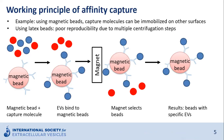The working principle after capture is illustrated on this slide. We focus on magnetic beads, which is only one option — capture molecules may be immobilized to other surfaces as well. However, when using latex beads, many centrifugation steps are needed, leading to less reproducibility. In this example with magnetic beads, they are covered with the capture molecule, bind to specific EVs, and a magnet then selects the beads with specific EVs.